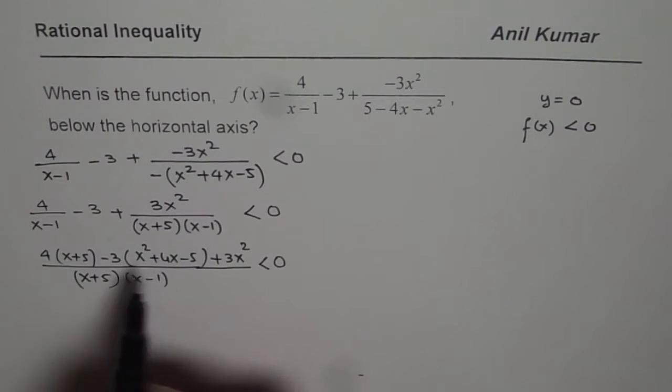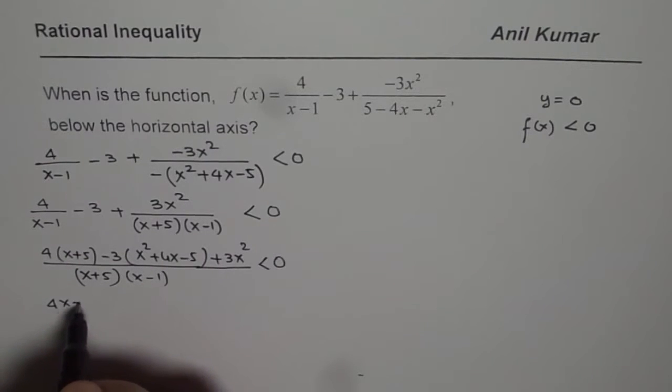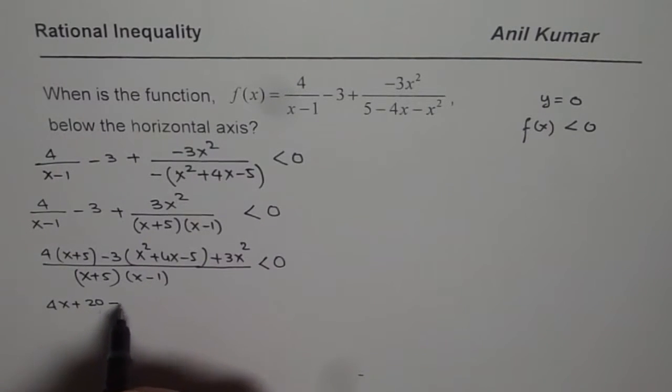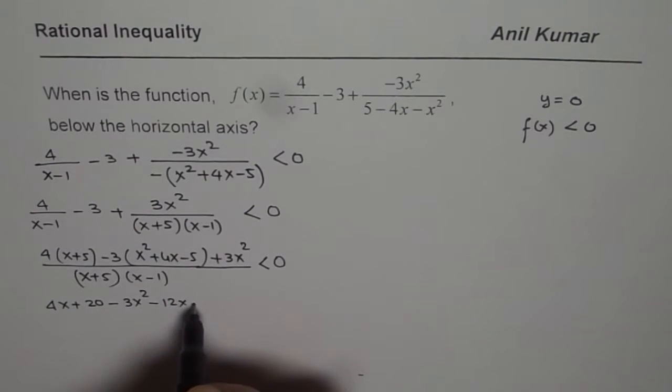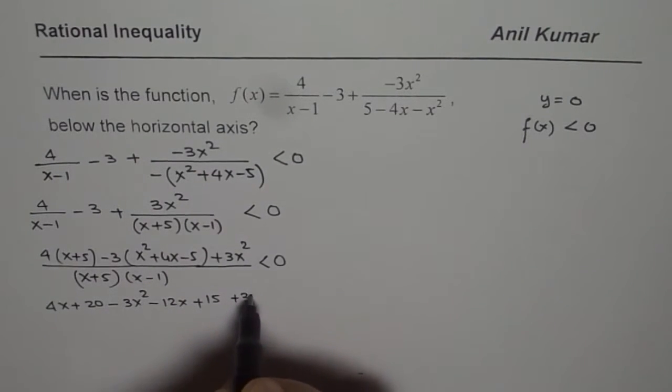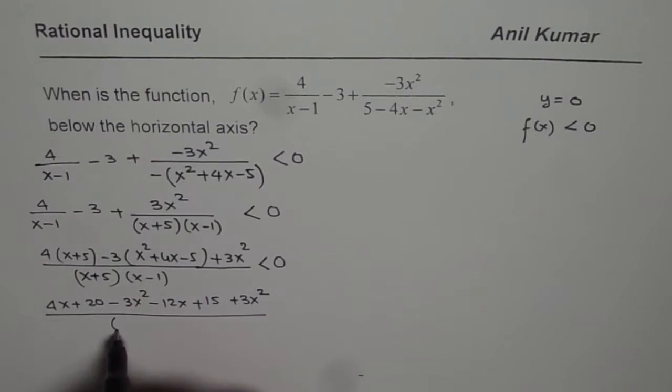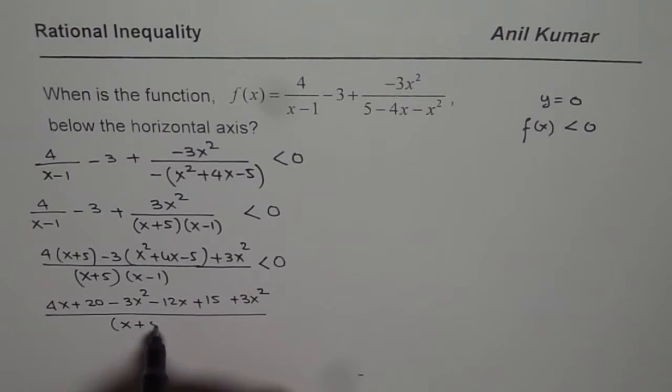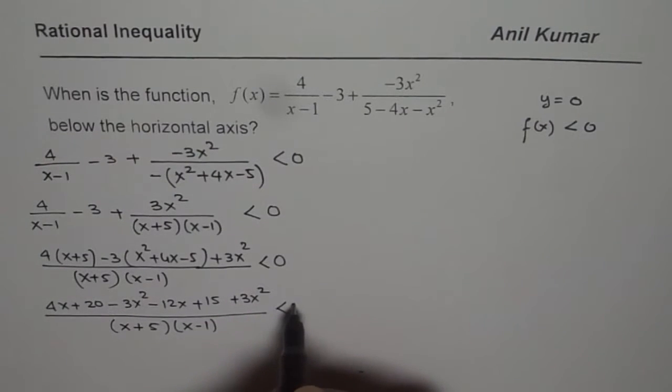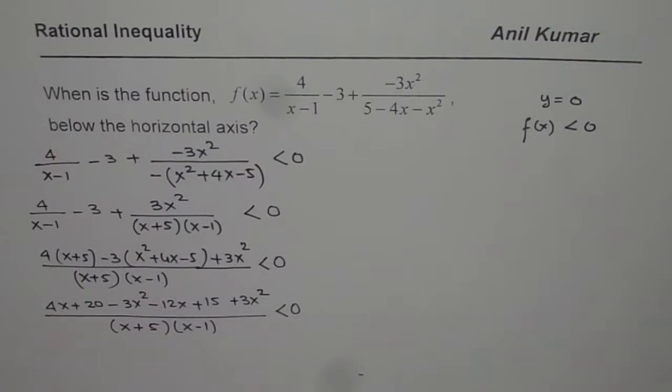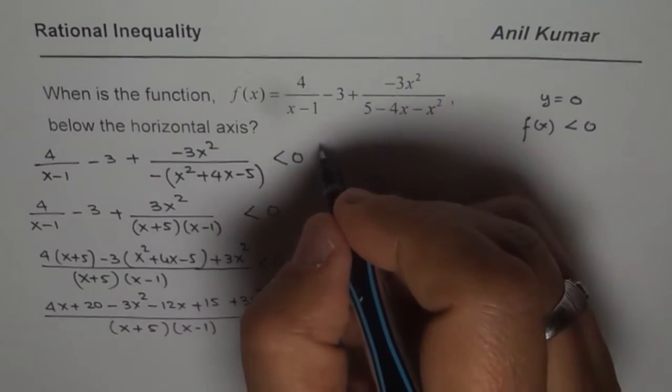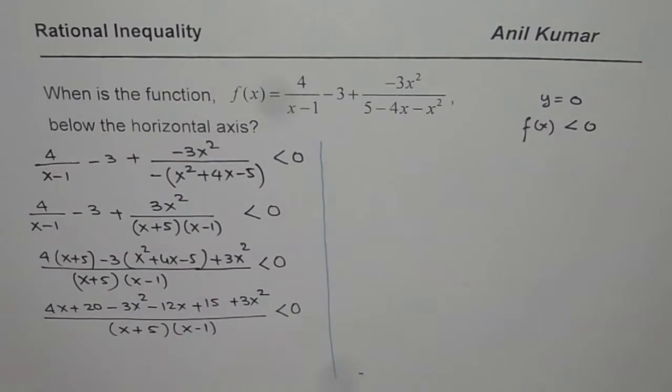Now we can expand and simplify. So we have 4x plus 20 minus 3x squared minus 12x plus 15 plus 3x squared, divided by x plus 5 times x minus 1, and that should be less than 0. Now let's take it to the right side to further simplify and get our answer.